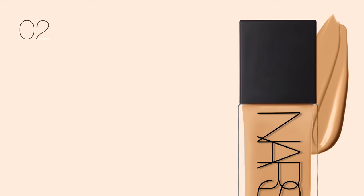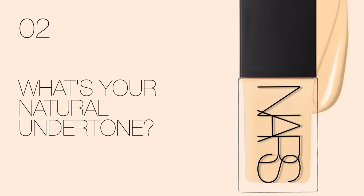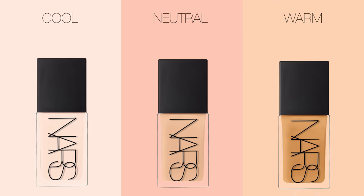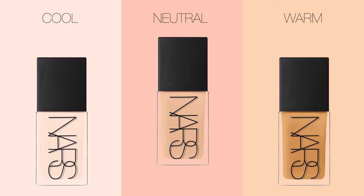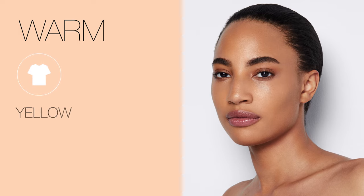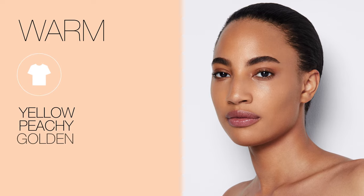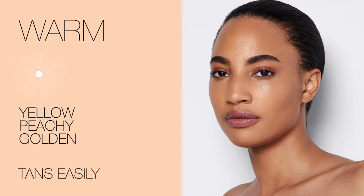Step 2: What's your natural undertone? You're going to be either cool, warm, or neutral. If you are warm, when you are wearing a white shirt, yellow, peachy, or golden tones are more pronounced. When skin is exposed to sun, you're more likely to tan.